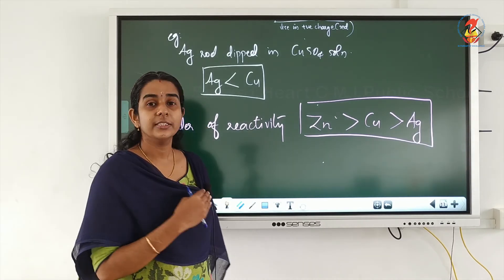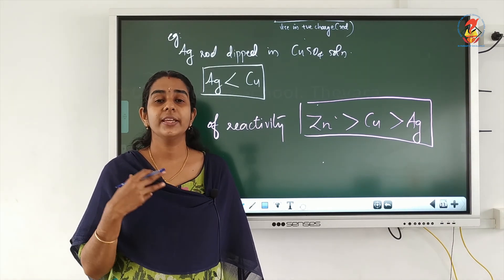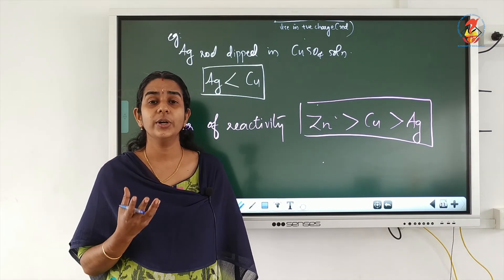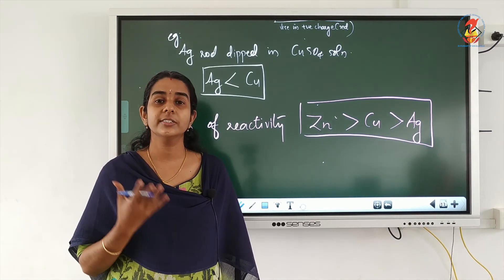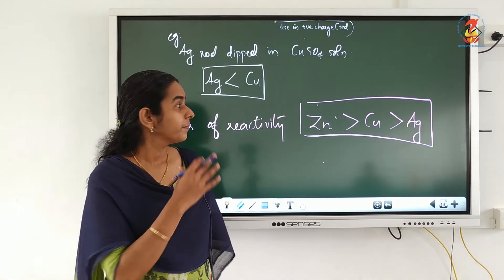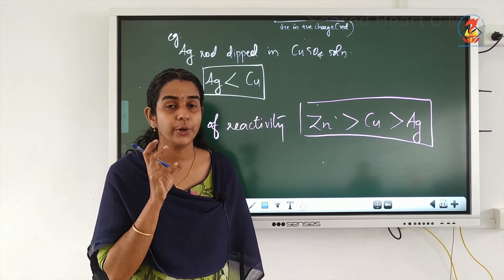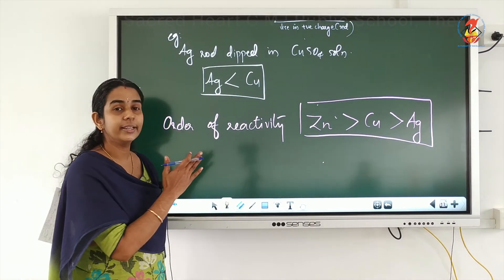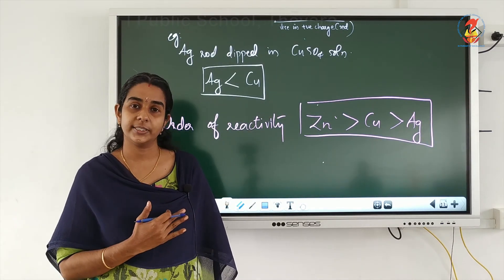Based on this concept — that different metals have different orders of reactivity — it is used to design certain cells called galvanic cells or electrochemical cells: the batteries used in torches, clocks, inverters, automobiles, etc. This concept is very important to design galvanic cells, which is based on the activity series or reactivity series. The basic concept behind this activity series is this competitive electron transfer process.